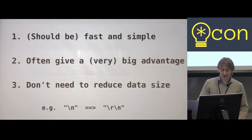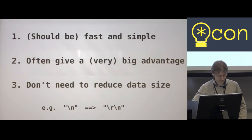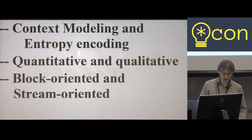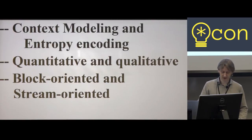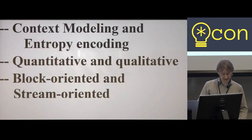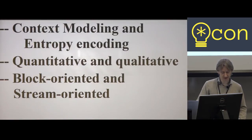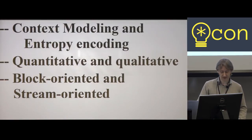Why are compression methods so different? Context modeling methods assume elements of data depend on context somehow, and entropy encoding methods assume they are independent. Also, some compression methods assume data are quantitative, like samples, while other methods assume data are qualitative, like symbols. And my experience says this is the most important distinction.